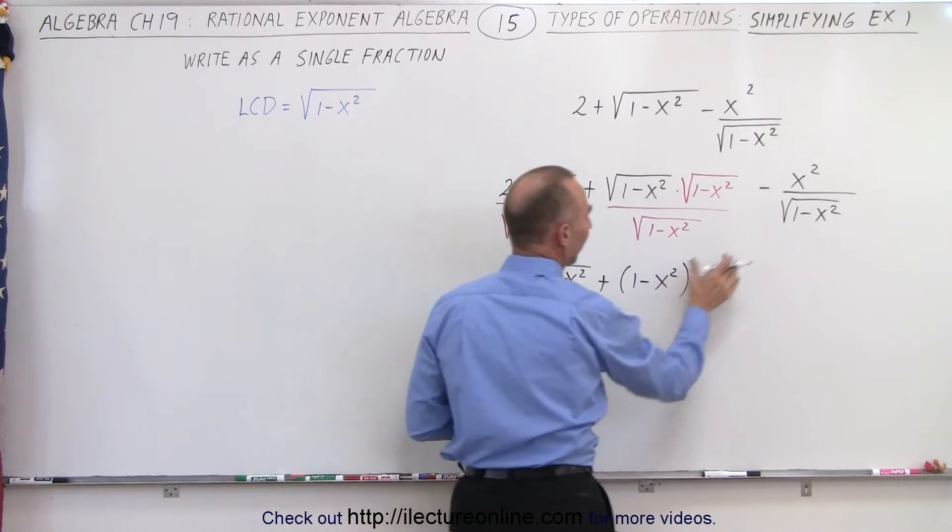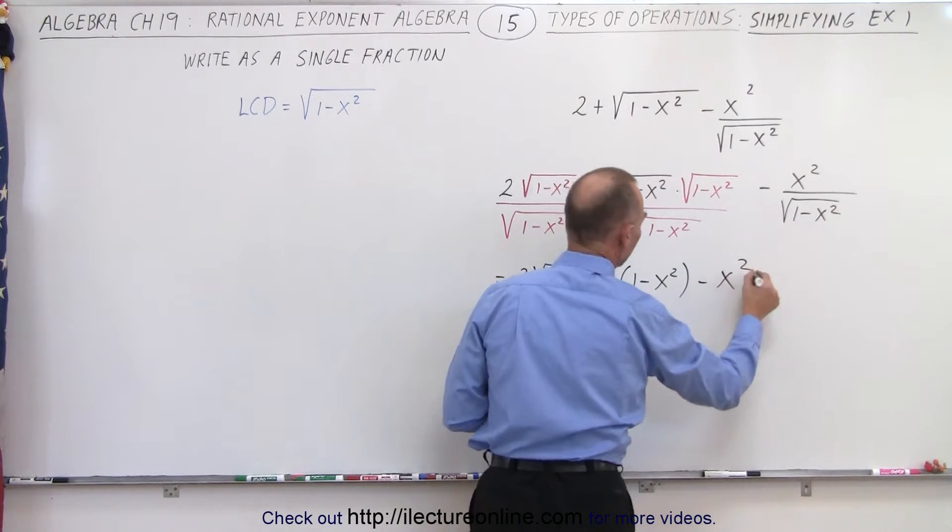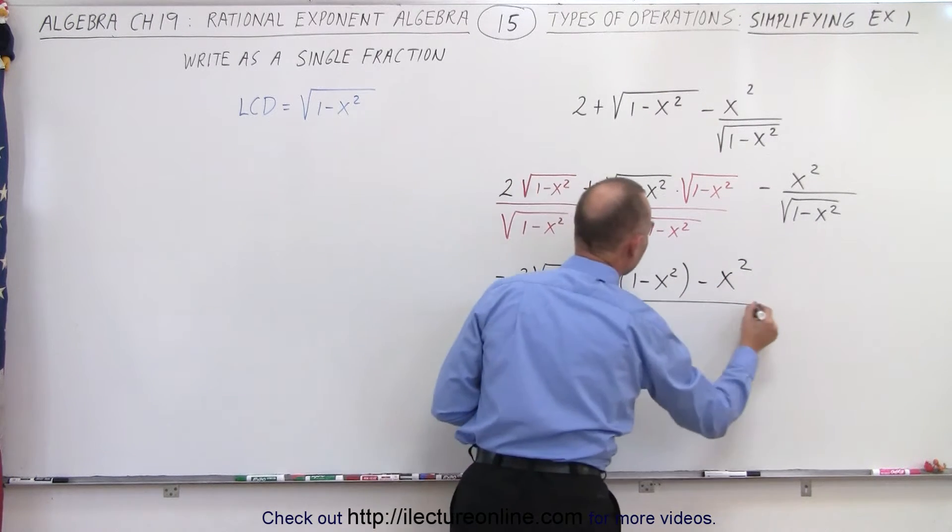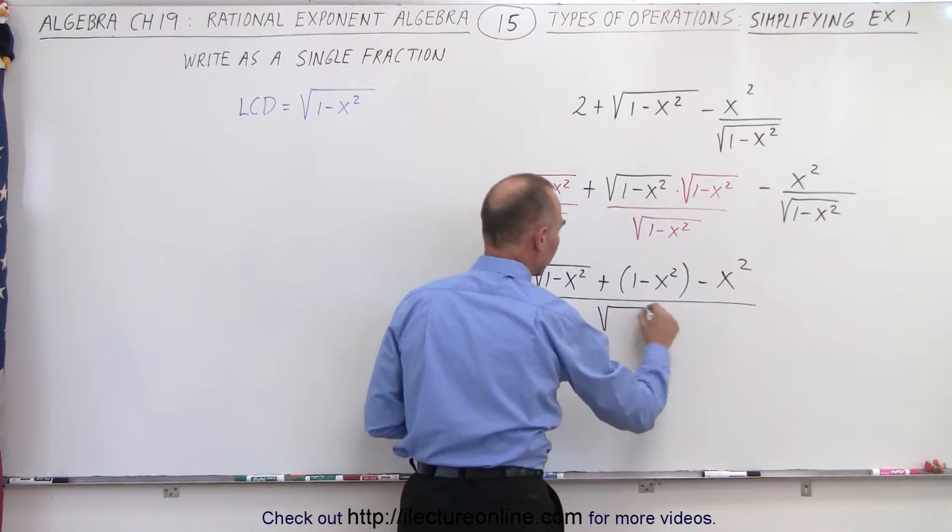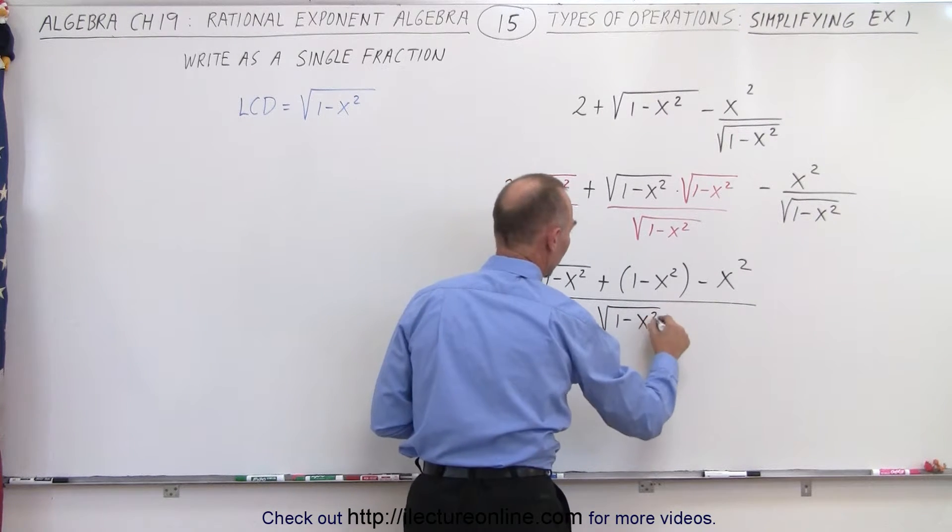and then finally minus x squared, all divided by the same common denominator of the square root of 1 minus x squared.